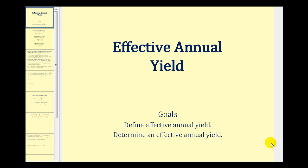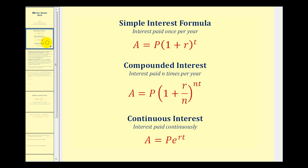Welcome to a lesson on determining effective annual yield. Let's start by reviewing the three different ways that yield or interest can be calculated. The most basic formula is simple interest, where interest is paid once a year. The most common is compounded interest, where the interest is paid a certain number of times per year — in this case, N times per year.